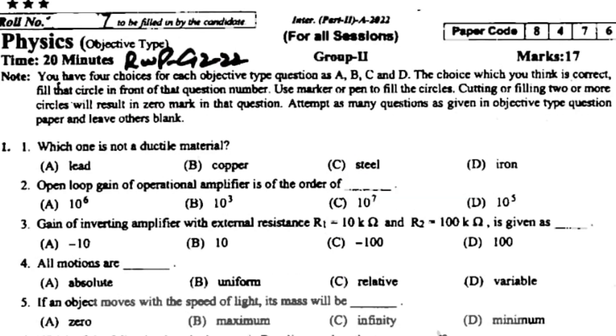Which one is not a ductile material? Lead. Open loop gain of operational amplifier is of the order of 10 to the power 7. Gain of inverting amplifier with external resistance R1 equal to 10k ohm and R2 equal to 100k ohm is given as minus 10.